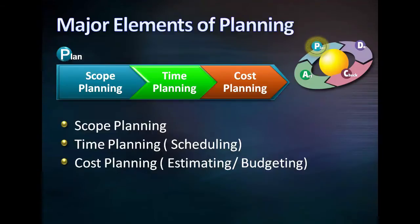The planning process starts off with determining the nature and scope of the project. If this stage is not performed well, it is unlikely that the project will be successful in meeting the business's needs. The planning process continues with planning time, cost, and resources to estimate the work needed and to effectively manage risk during project execution.